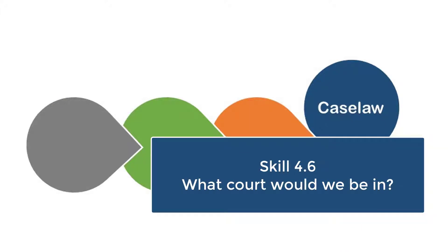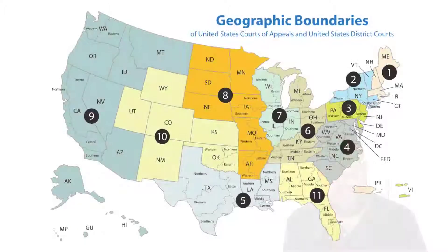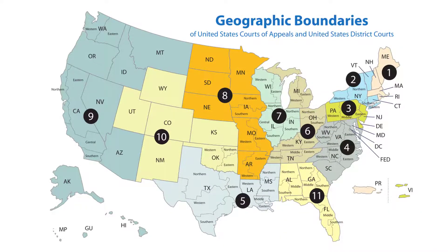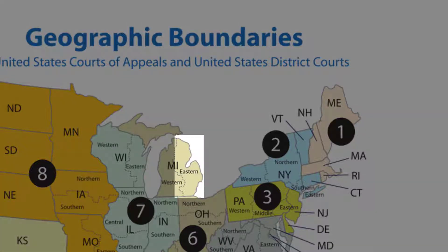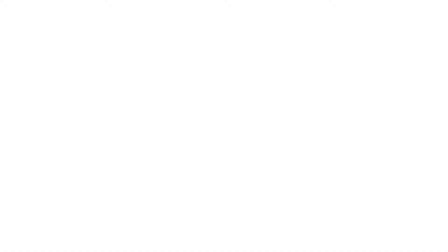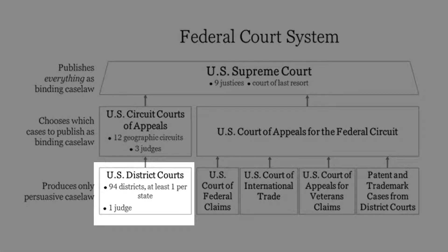Before we can do that, we need to do skills 4.6 and 4.7. Skill 4.6 is simply to be aware of the court that we're in. We haven't been sued yet, but if we were sued, it would likely happen in the Eastern District of Michigan — the federal district court for the Eastern District of Michigan. That's the trial court level. If this weren't about litigation, by the way, you always just assume that you're at the trial court level. And the next skill is why that's important to know.